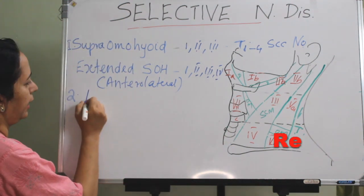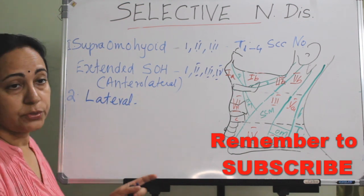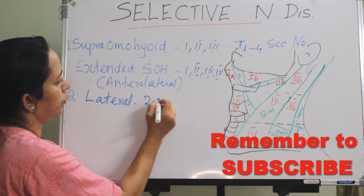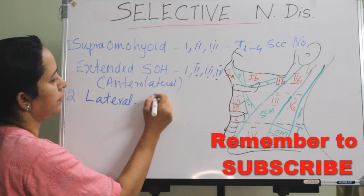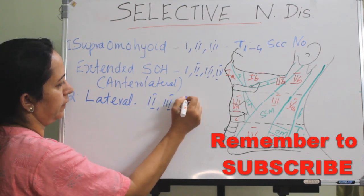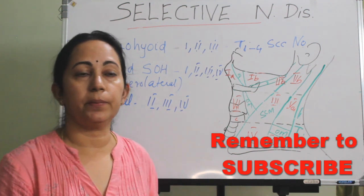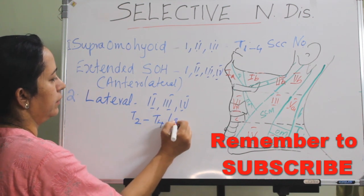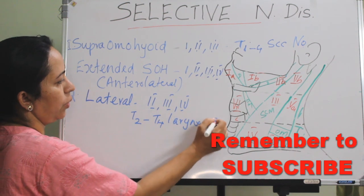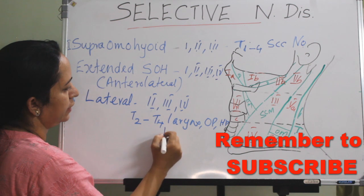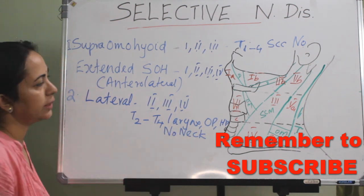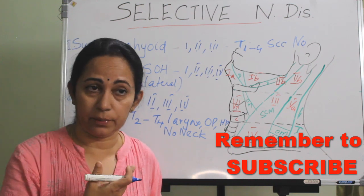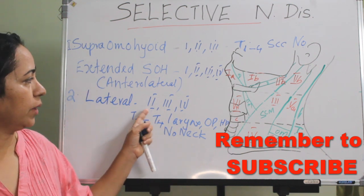The second type is the lateral selective neck dissection, covering levels 2, 3, and 4. The indication is T2 to T4 squamous carcinoma of the larynx, oropharynx, or hypopharynx with an N0 neck. Since there is a high chance of bilateral involvement in these cases, we usually perform bilateral removal of levels 2, 3, and 4.